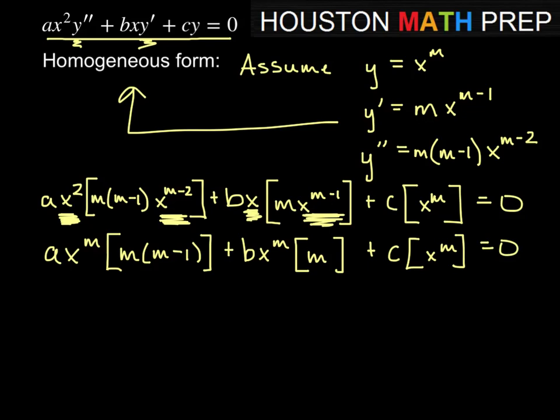So we can factor out x to the m, giving us x to the m times a times m times m minus 1, plus b times m, plus c, equal to zero.